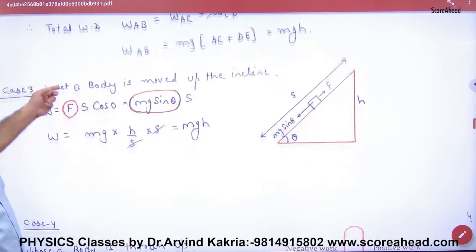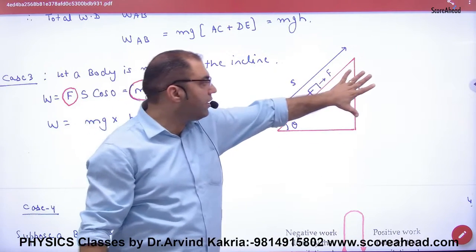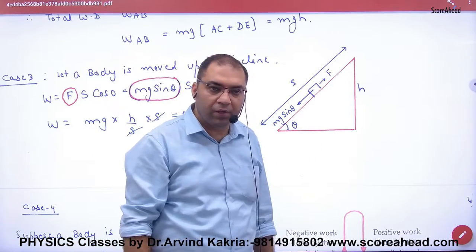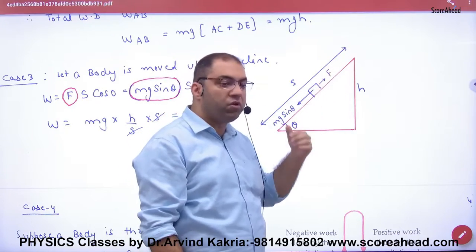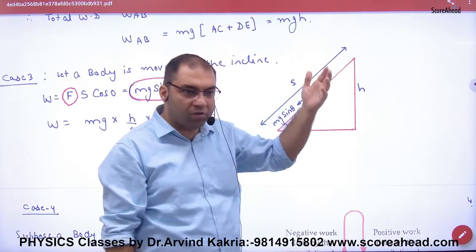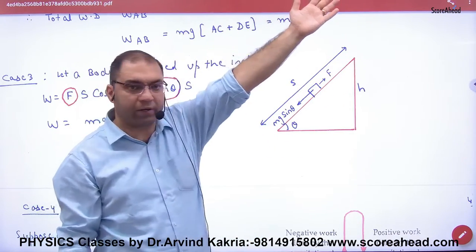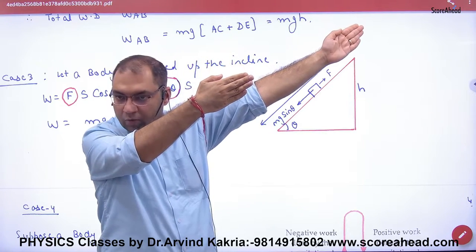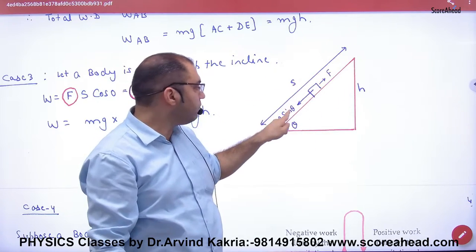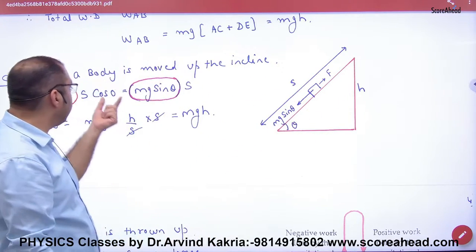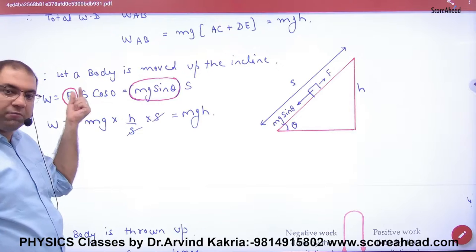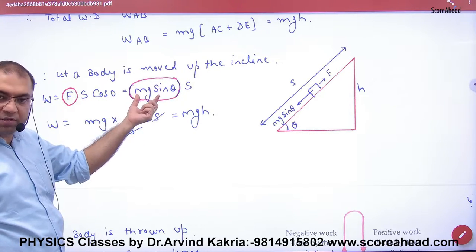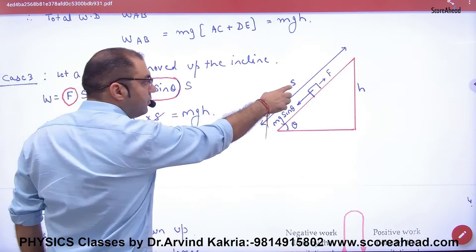The third case is taken on the inclined plane. The inclined plane has vertical height h and the object is displaced along the slope S. When the object goes up, the force along the incline is mg sin theta, and displacement S is also up the incline. The angle between force and displacement is 0, so work done is mg sin theta into S into cos 0.